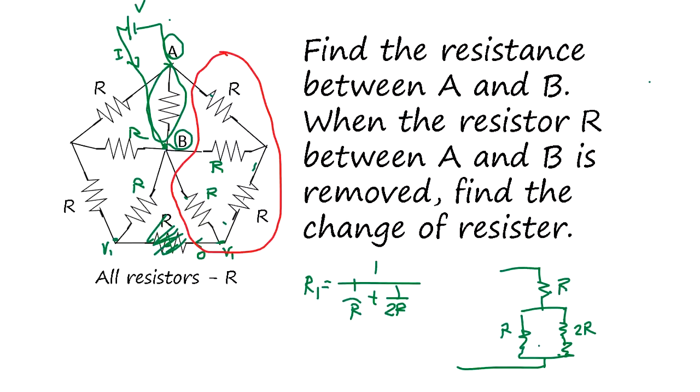Okay, so if you multiply 2R, so 2 over 3R, you add this one in series. R2 is going to be 2/3R plus R, which equals 5 over 3R.